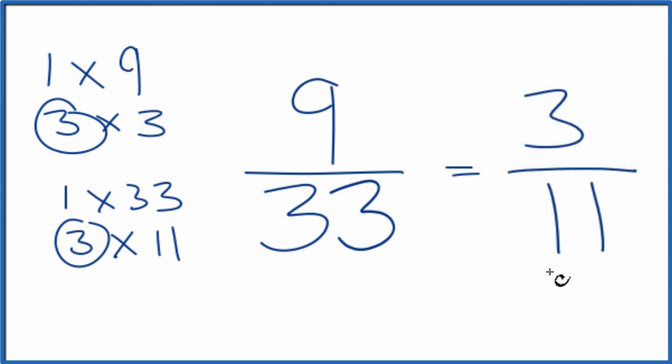And we can't simplify this any further. These are equivalent fractions. 9 divided by 33, 3 divided by 11, you get the same number. It's just that we've simplified 9 over 33 down to 3 over 11.